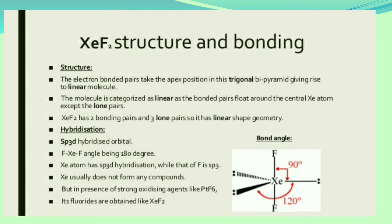For XeF2, the electron bonding pairs take the apex positions in a trigonal bipyramidal arrangement, giving rise to a linear molecule. As you can see in the structure, the bond pairs are in the above and apex positions, giving the linear geometry. The lone pairs are in the triangular equatorial positions.